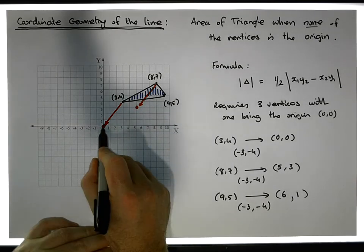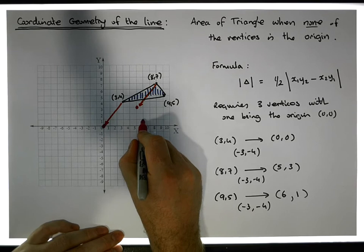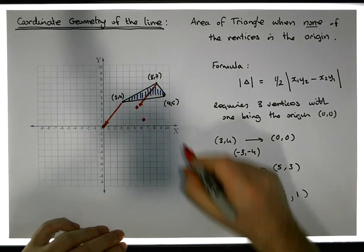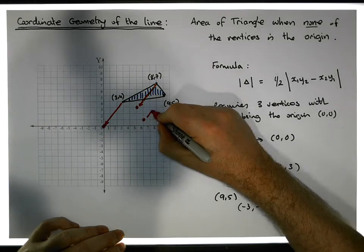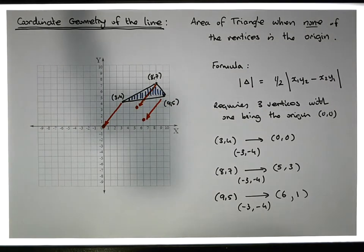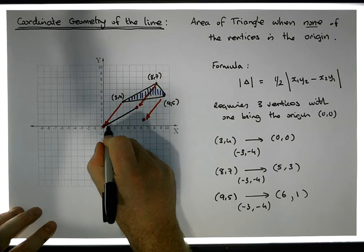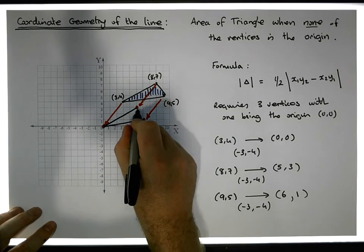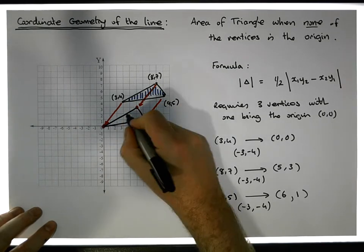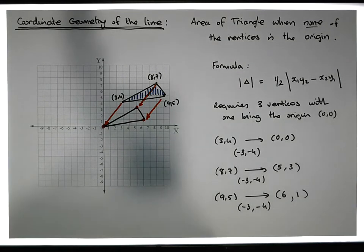So 9 minus 3 gives us 6, and 5 minus 4 gives us 1. So 9,5 is taken to 6,1. And 6,1 is 6 in the x direction and 1 in the y direction, so there's a point here. So effectively we have 9,5 was taken in this direction here, and there's our new triangle that has one of our coordinates at the origin.